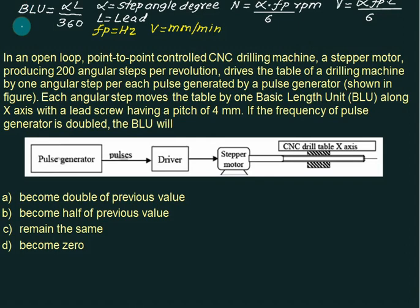Check your BLU unit. BLU is given by alpha multiplied by L divided by 360. This term is independent of pulse frequency fp, and therefore we can conclude that even if the pulse frequency is doubled, the BLU will not change, that is it remains the same.